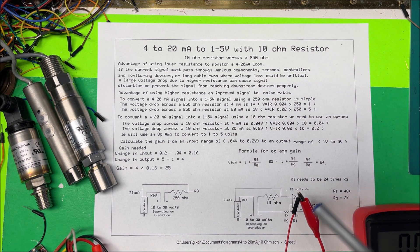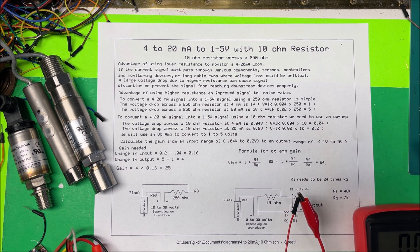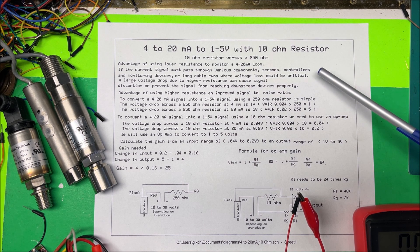The voltage drop across the 10 ohm resistor at 4 milliamps is 0.04 volts, and the voltage drop across the 10 ohm resistor at 20 milliamps is 0.2 volts.